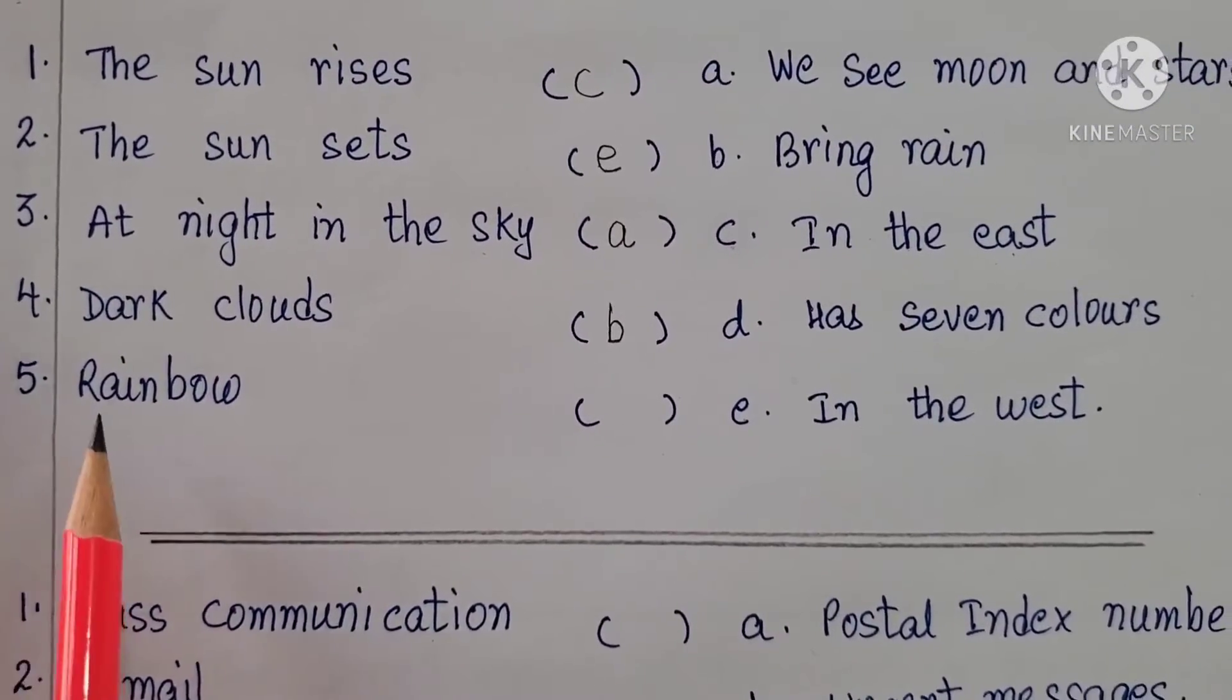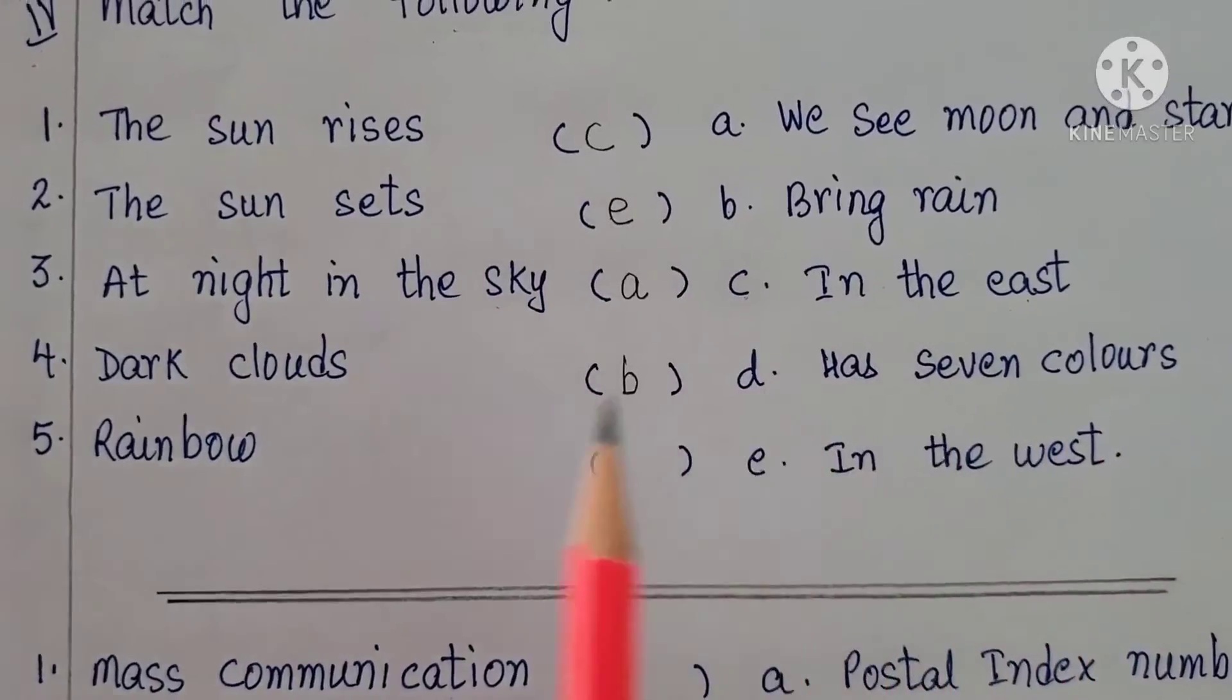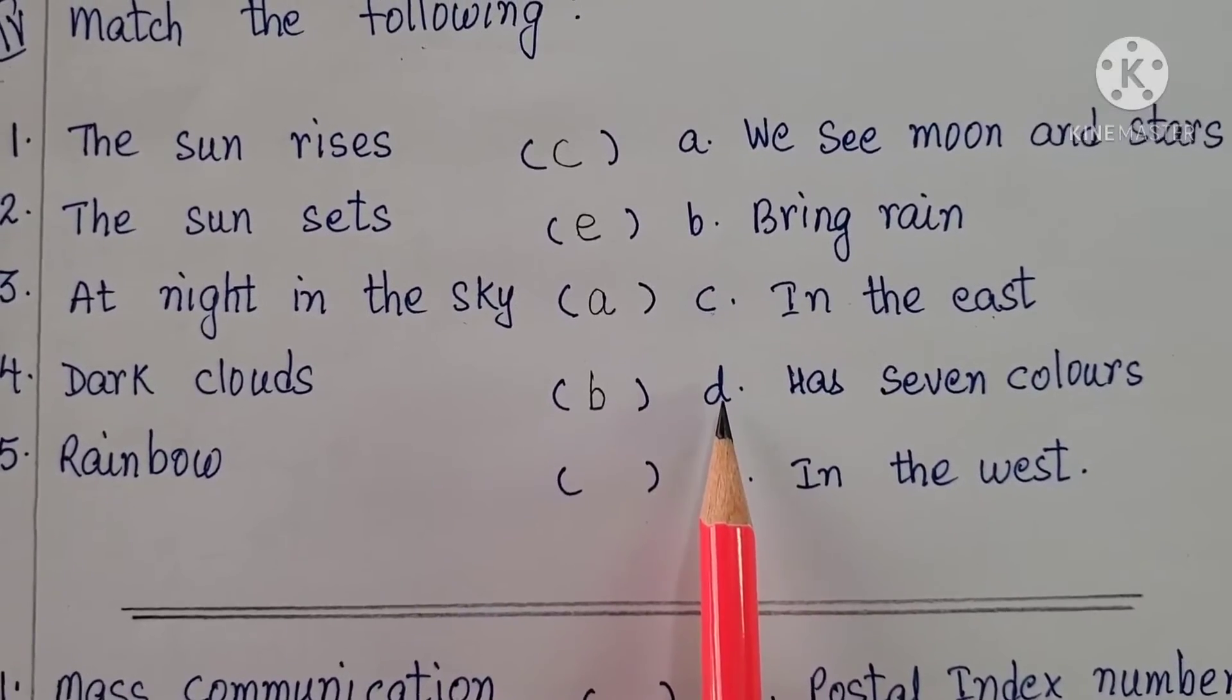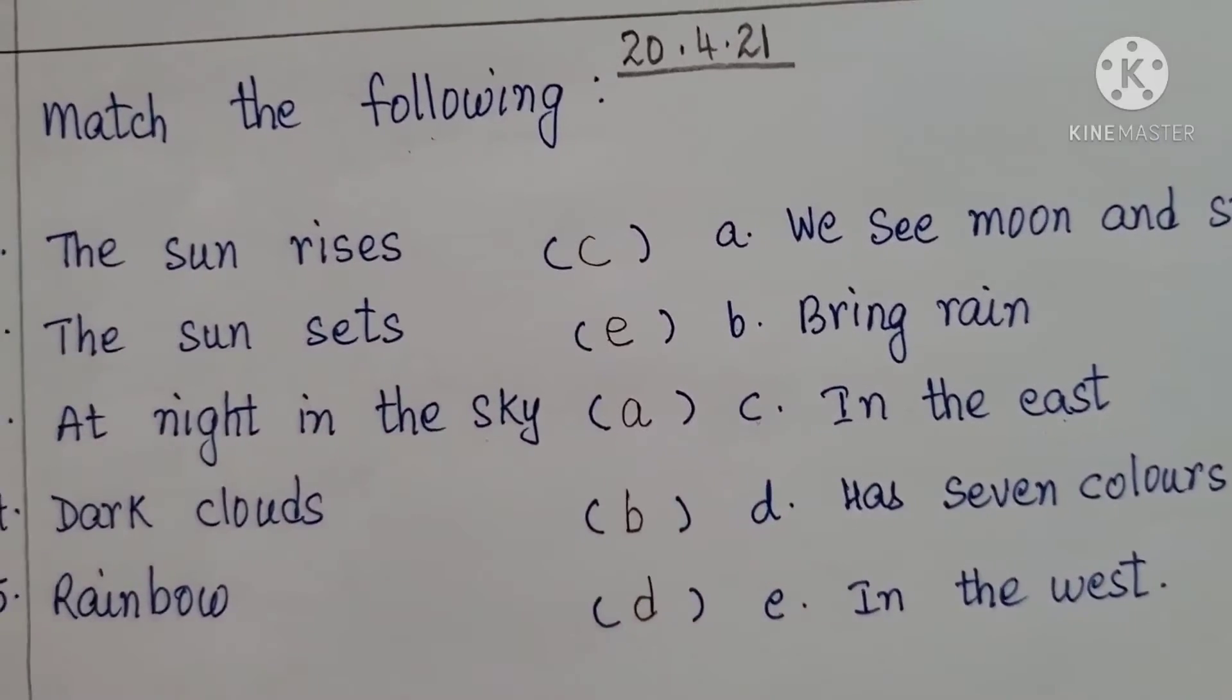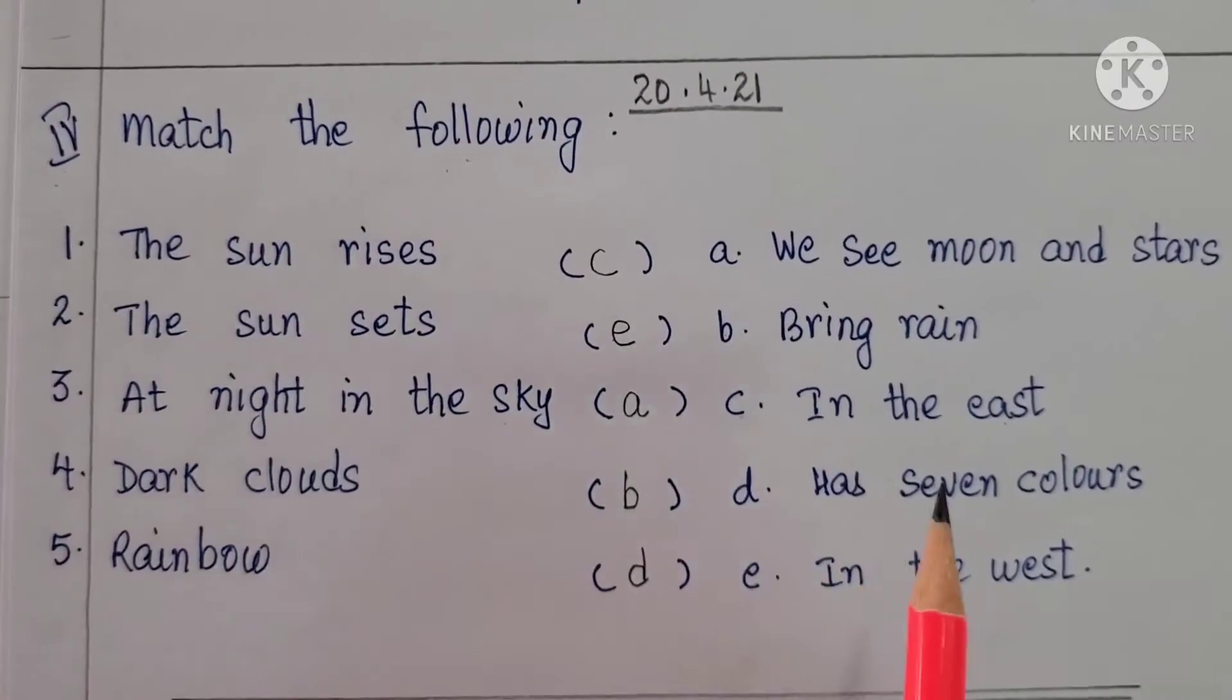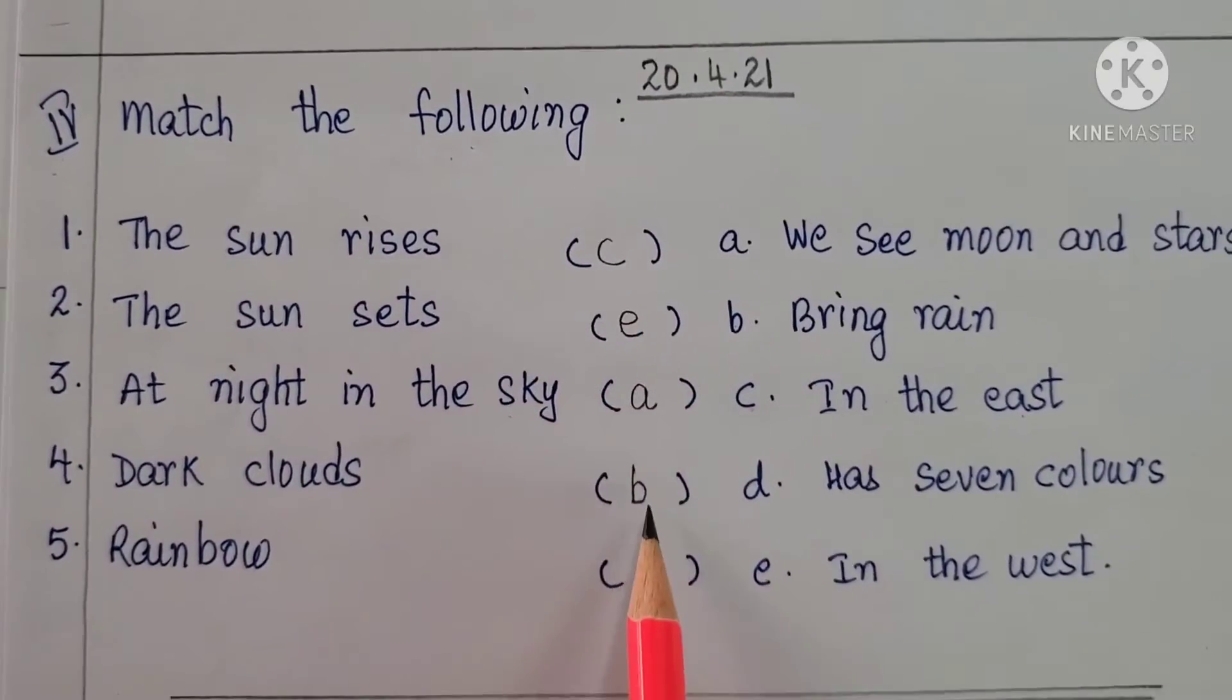Now the fifth one. Rainbow. Rainbow has seven colors. What does rainbow has children? Seven colors. It's matching with alphabet D. You need to write here D. So in this way you all need to first read both the sides and write the correct alphabet in the bracket.